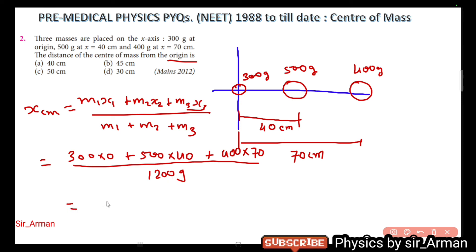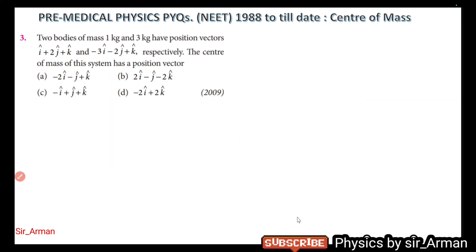Now just solve this. You will get 40 centimeters, so the center of mass lies at 40 centimeters from origin, that is at a point where this 500 gram mass lies.